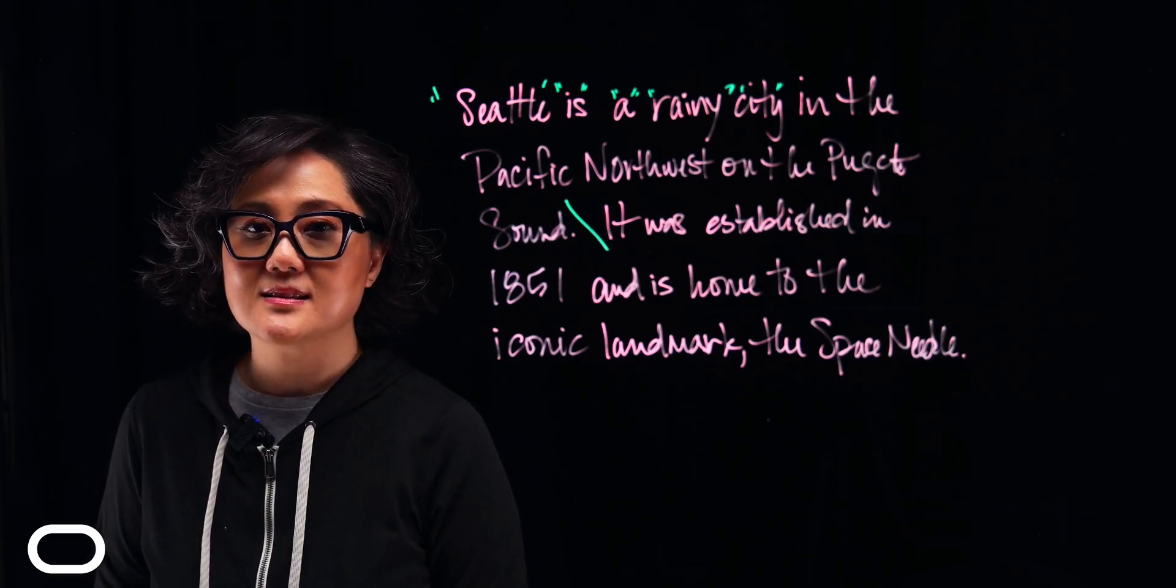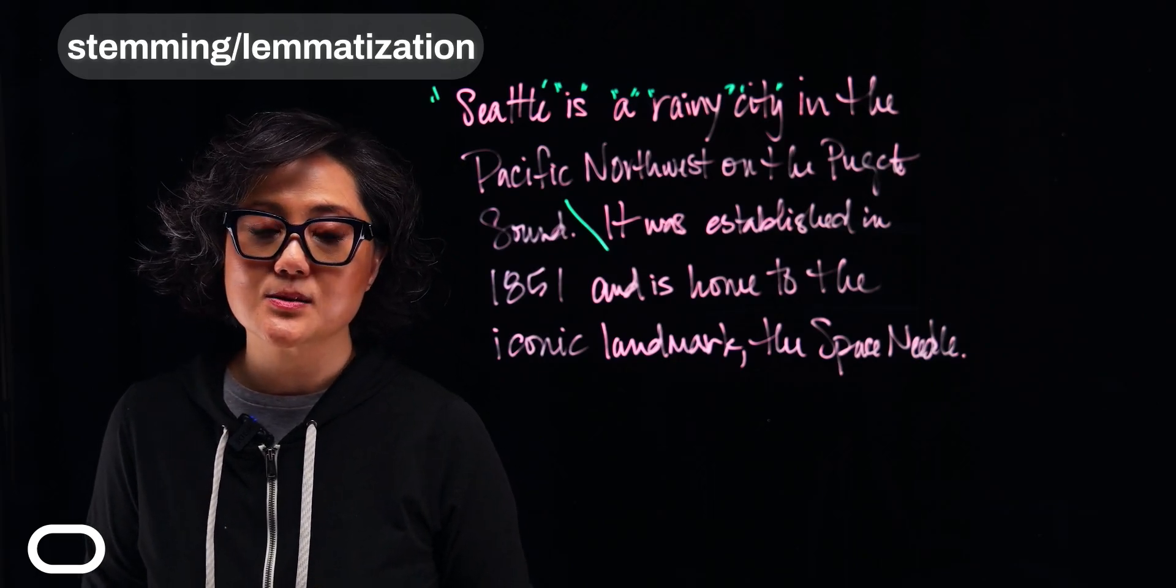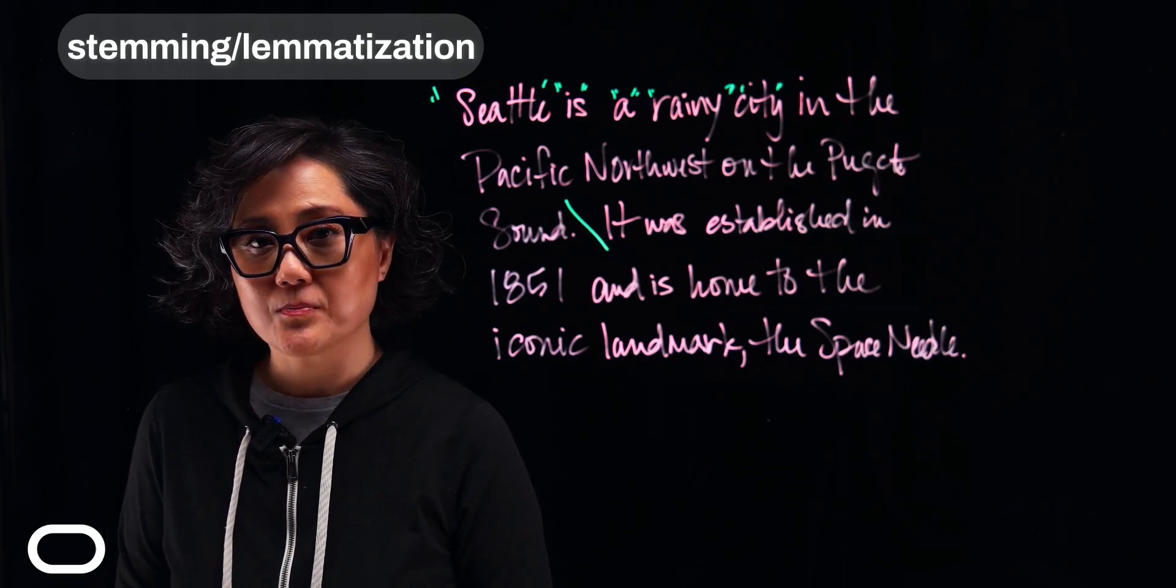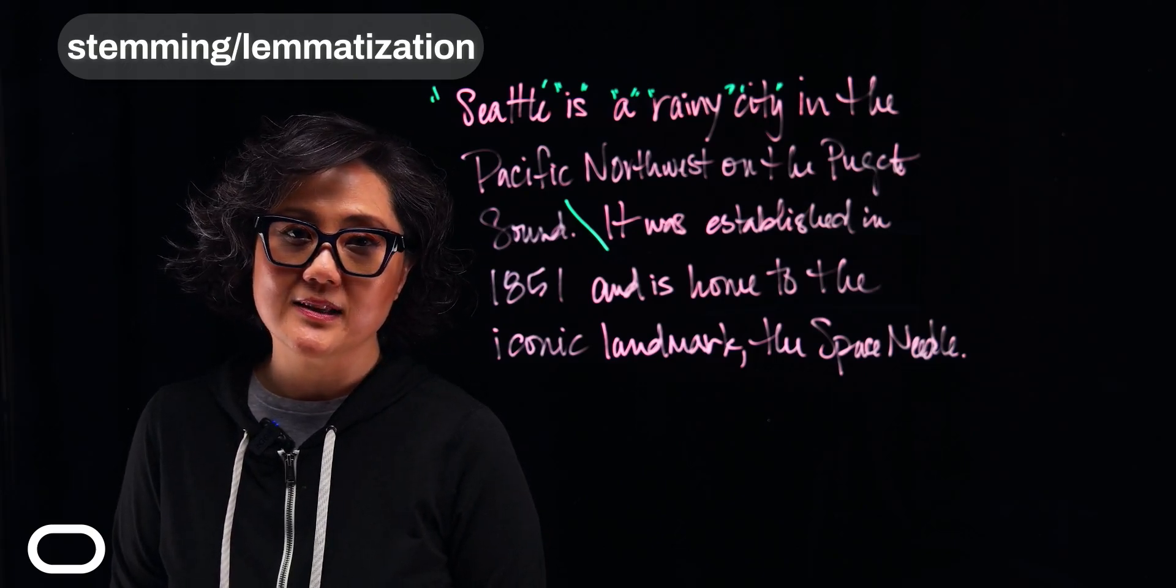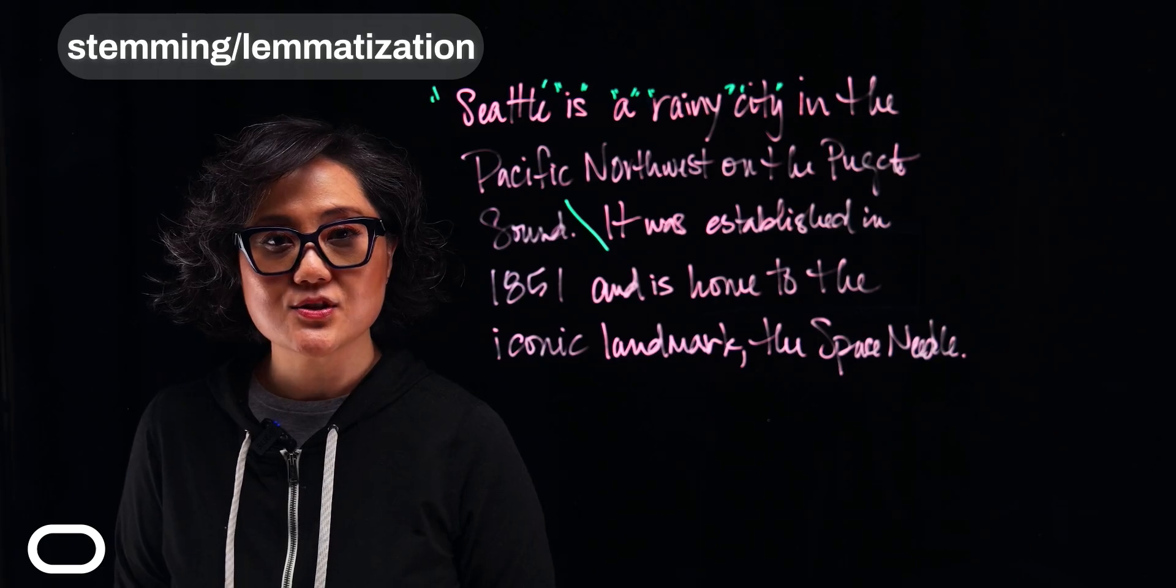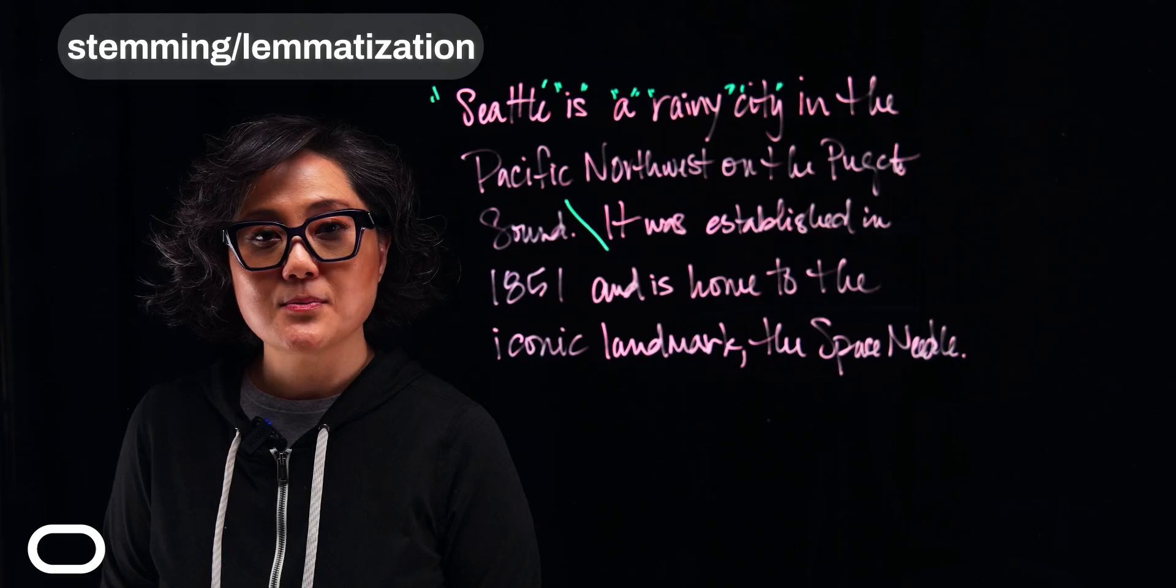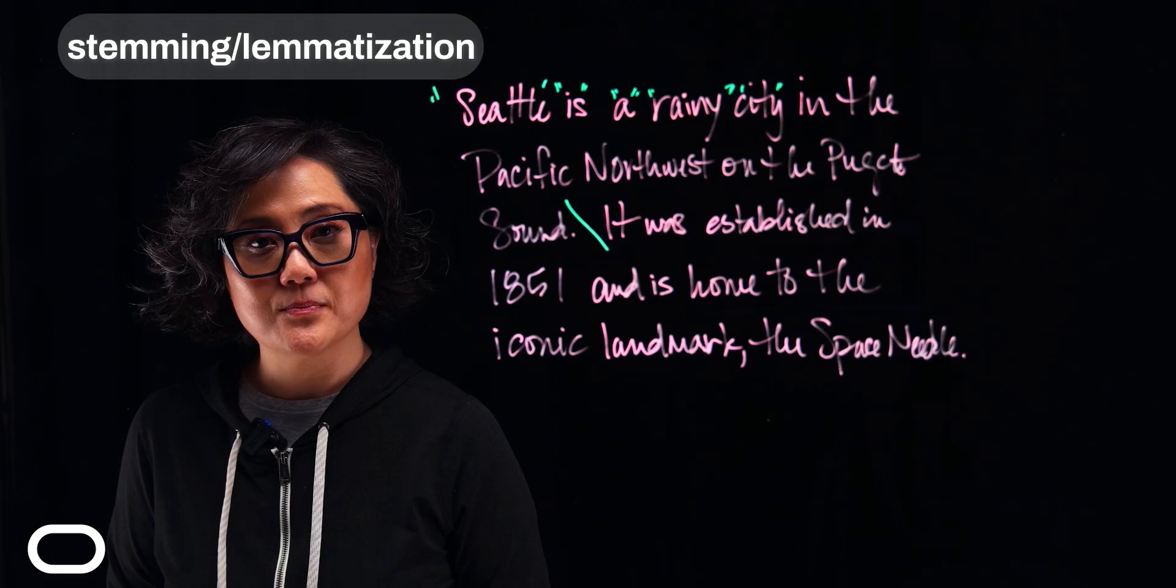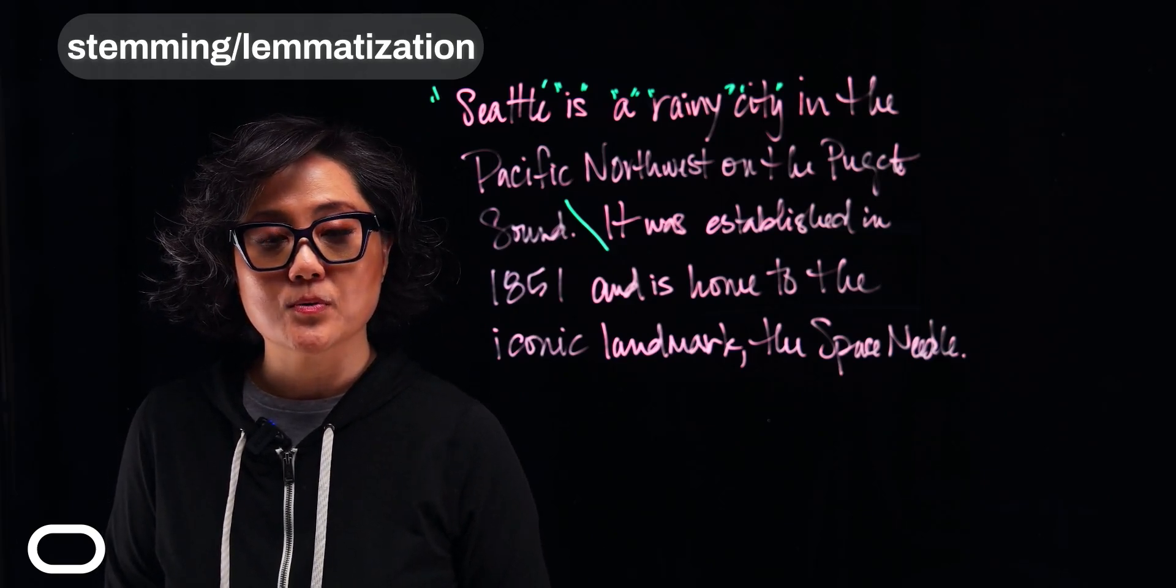The next step is stemming or lemmatization. Both of these steps are text processing techniques that reduce words to their root form, but each works just a little differently. Stemming can be faster but less accurate, and lemmatization is more accurate but can also be slower. Stemming removes suffixes to find the common root or stem, whereas lemmatization reduces words to their root form or lemma.